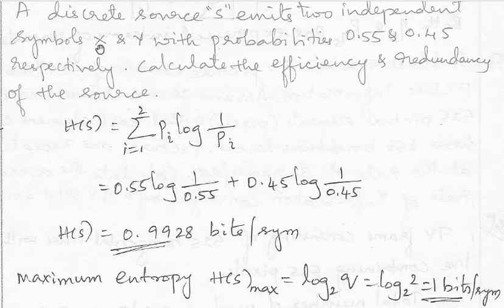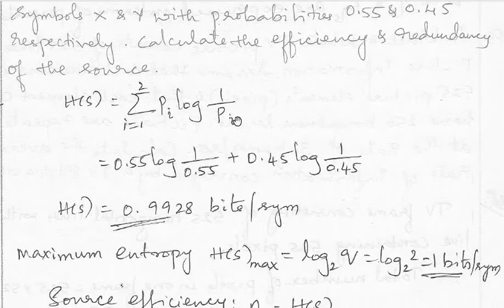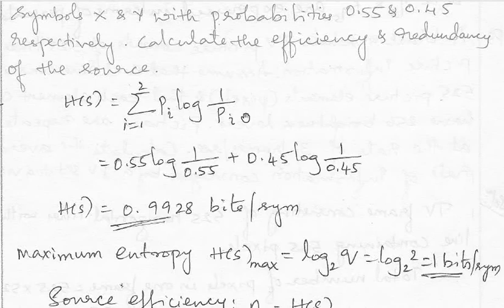So here it is given the two symbols X and Y. X has a probability 0.55 and Y has a probability 0.45. So we need to find the efficiency and the redundancy. So first, in order to find efficiency, we need to first find the entropy of the source.